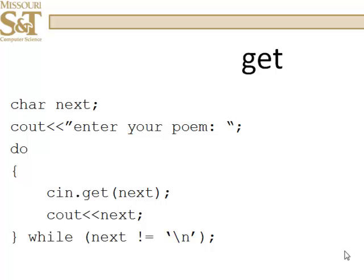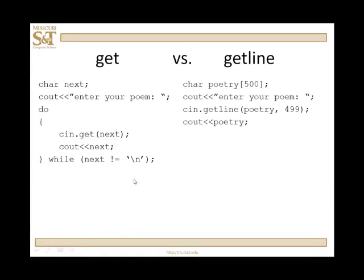Let's take a look at the get function in use. We have character 'next', cout 'enter your poem', do-while next not null — this reads character by character and outputs that character from the keyboard until somebody hits enter. This is the get version on the left and the getline version on the right. We declare an array 'poetry' of length 500, prompt for it, and 'cin.getline(poetry, 499)'. Then we write that poetry array out — it's a C string or null terminated character array.